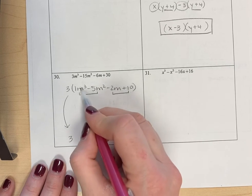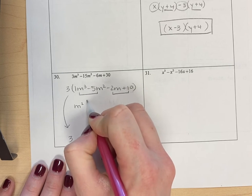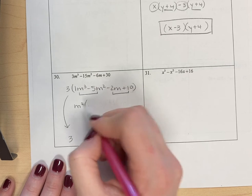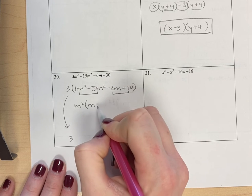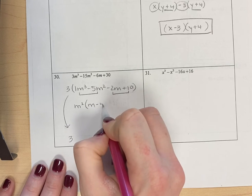So if I look at the first pair, they have in common an m squared. They have at least two m's. m cubed divided by m squared is m. Negative 5m squared divided by m squared is negative 5.